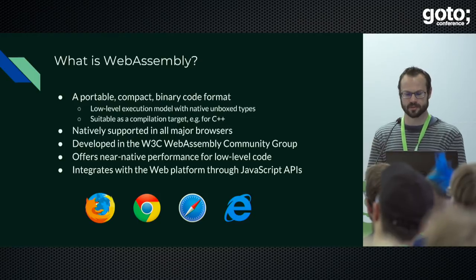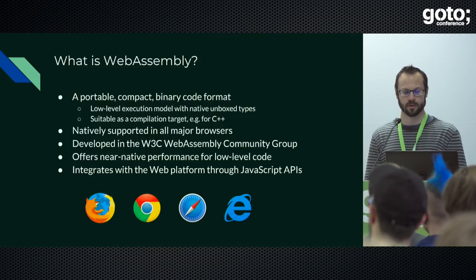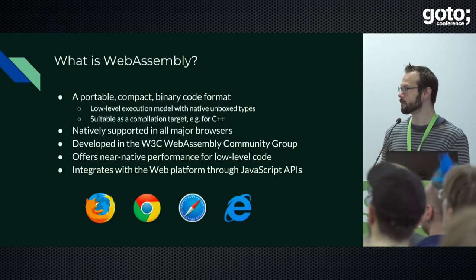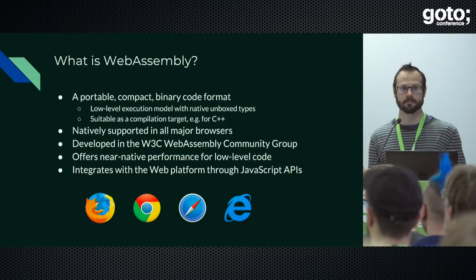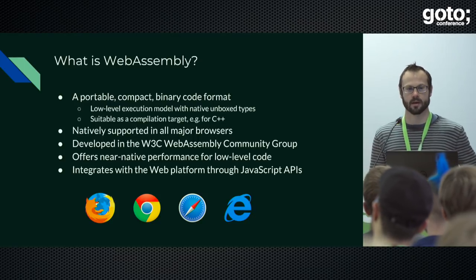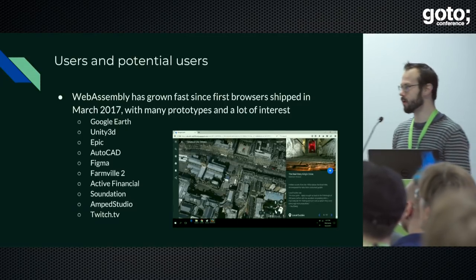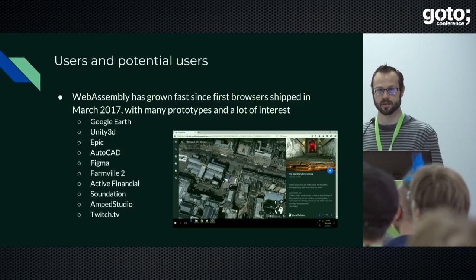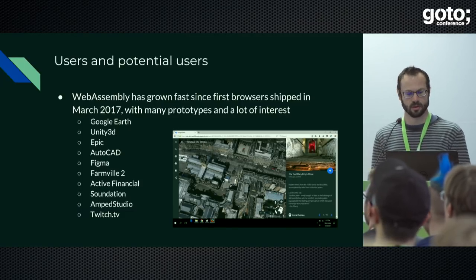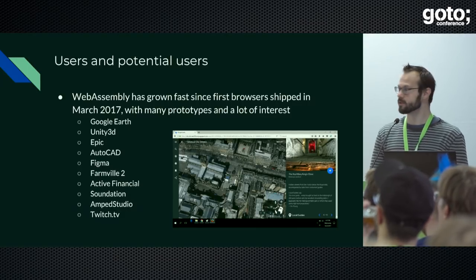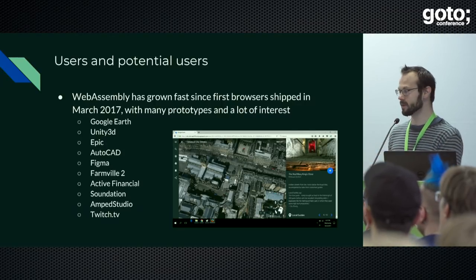We developed it under the auspices of a W3C community group which allows anyone to join and comment, and also a working group which is a more formal body that approves final specifications. The idea is that we didn't want to reinvent the web platform but integrate with it. So any API available in JavaScript you can get to through WebAssembly. There are many users already — Google Earth, the Unity 3D engine, CAD applications, Farmville 2, audio editing, and more are now coming to the web with WebAssembly as the execution technology.